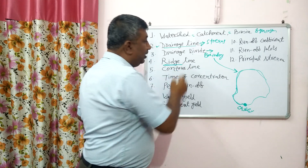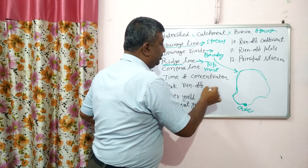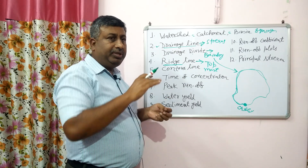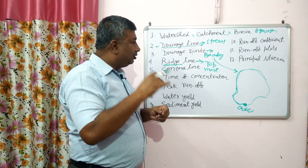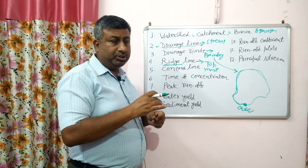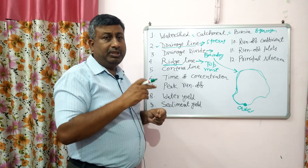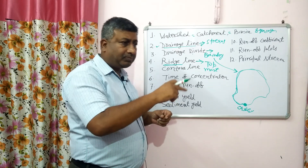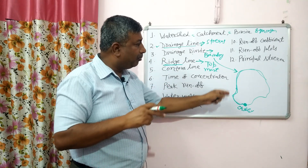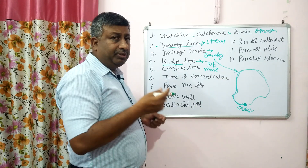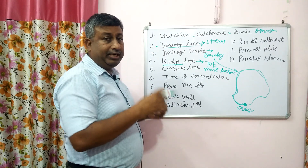Then, ridge line. Ridge is the topmost portion of any area. The points which join this ridge along the boundary are called ridge lines. Ridge line is the topmost portion of the watershed which is joined along the boundary.